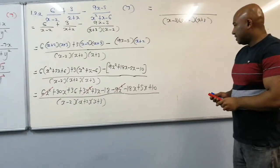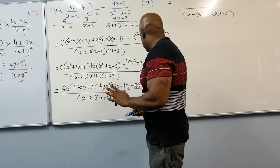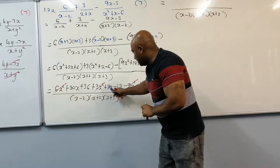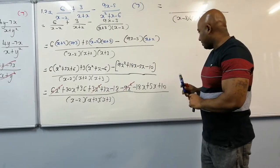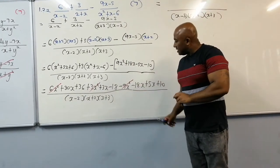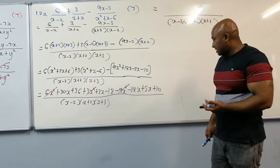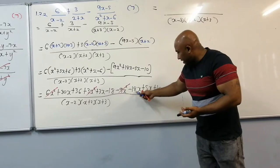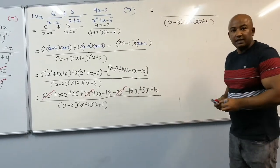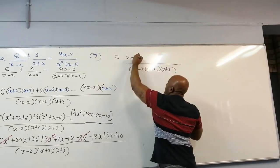Now adding up all the x terms: 30x plus 3x is 33x, minus 18x gives 15x, plus 5x gives 20x. So we end up with 20x.